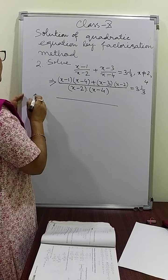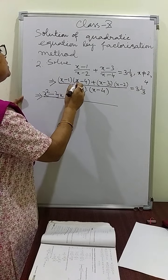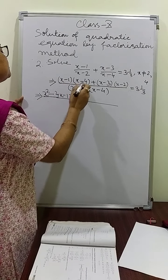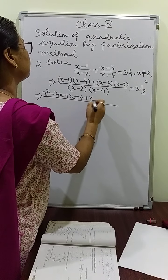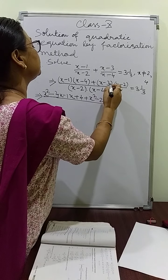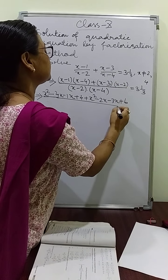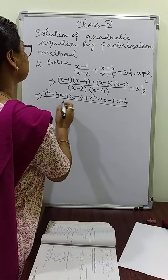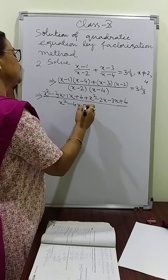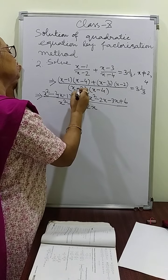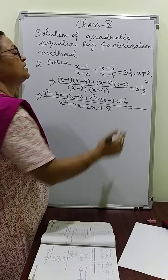Now let us multiply the numerator as well as denominator — we are multiplying the denominator also because we need a quadratic equation. Expanding: x into x gives x squared; x into minus 4 gives minus 4x; minus 1 into x gives minus x; minus 1 into minus 4 gives plus 4. Then plus: x squared; x into minus 2 gives minus 2x; minus 3 into x gives minus 3x; minus 3 into minus 2 gives plus 6. The denominator: x squared minus 4x minus 2x plus 8.